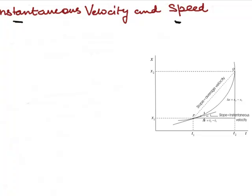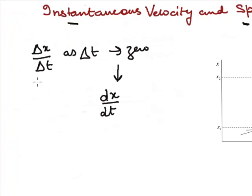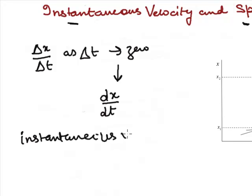Instantaneous velocity can be defined as the limiting value of average velocity where the second point comes closer and closer to the first point. Here the second point is Q and the first point is P. The limiting value of delta x upon delta t as delta t approaches 0 is written as dx upon dt, which is the derivative of x with respect to t. Thus instantaneous velocity is equal to dx upon dt.